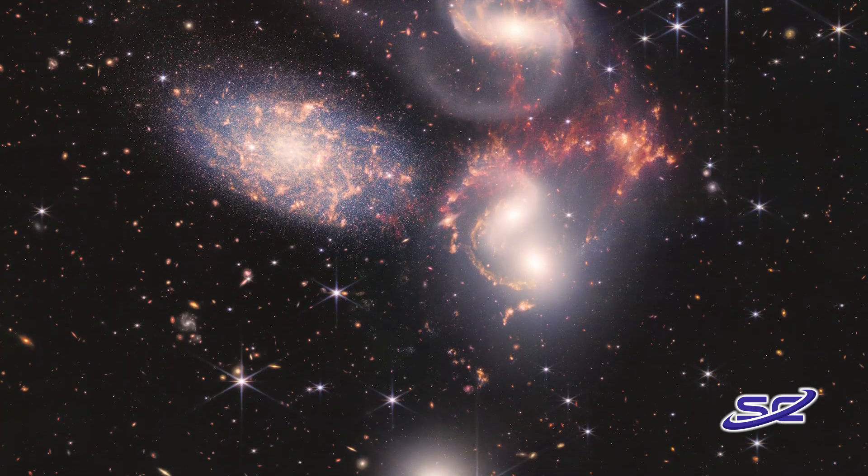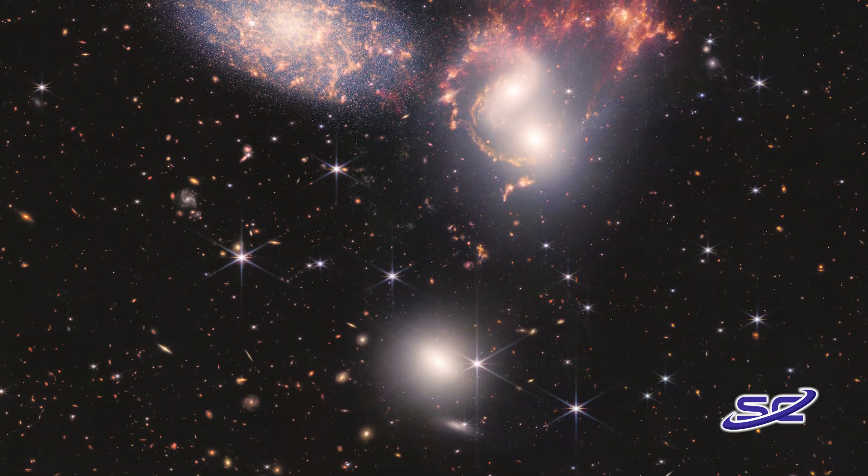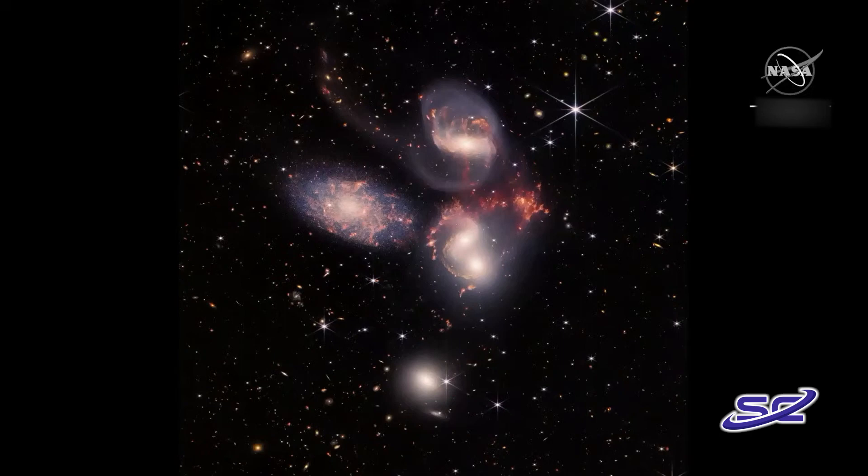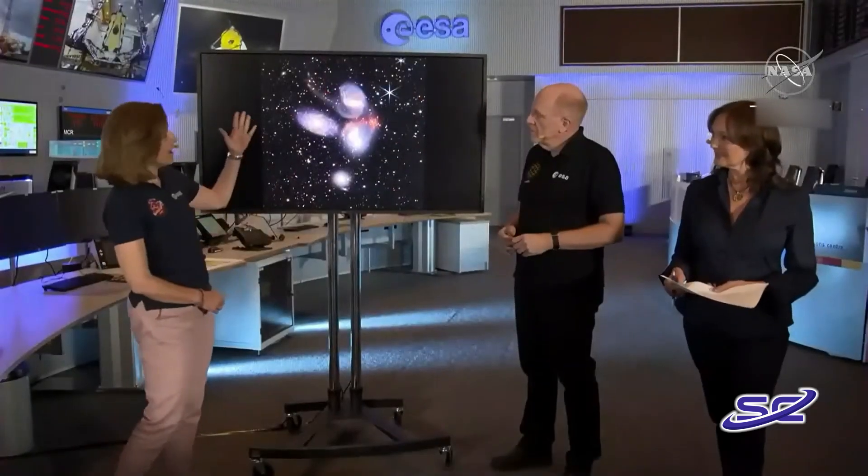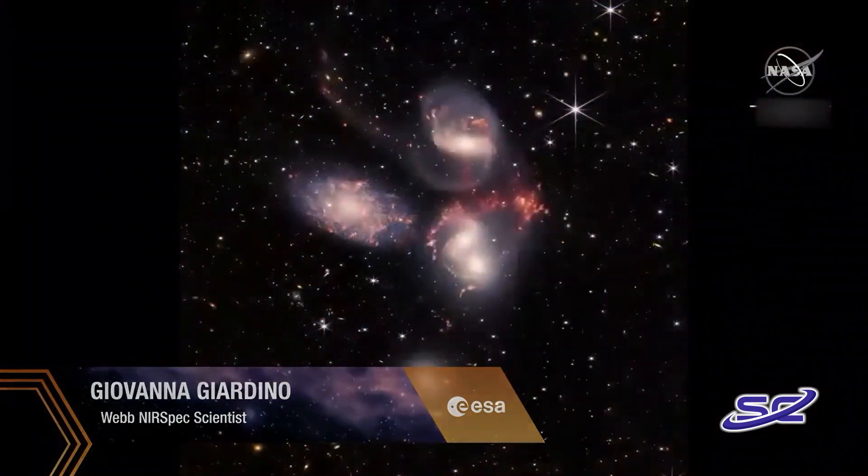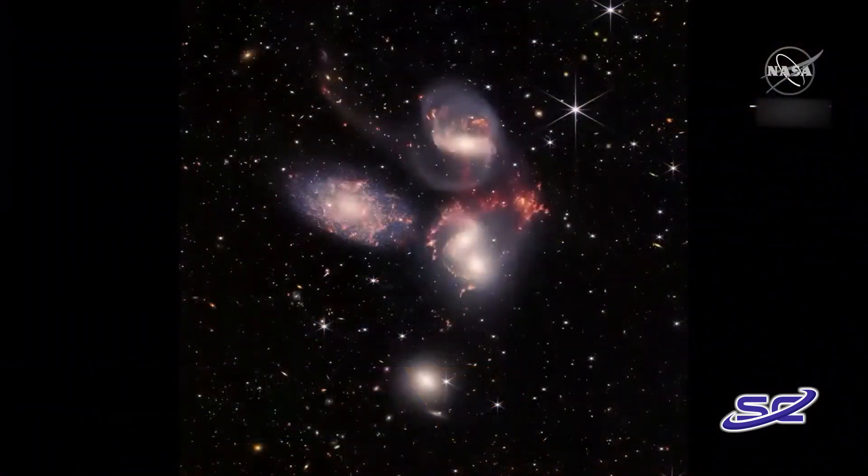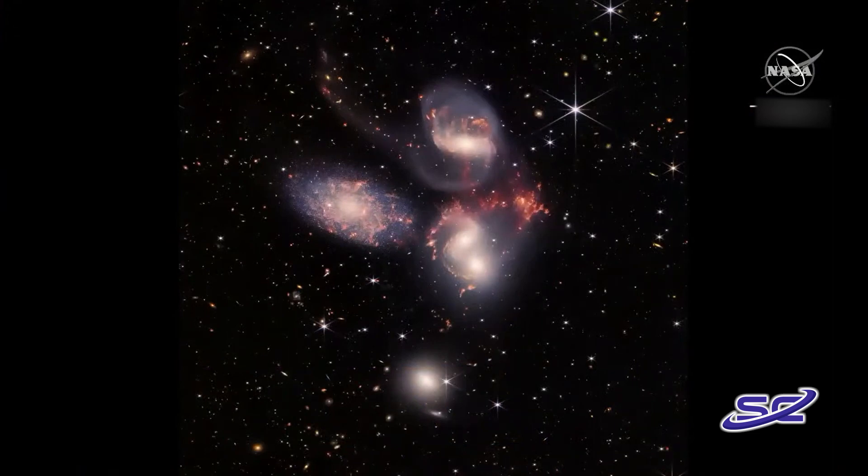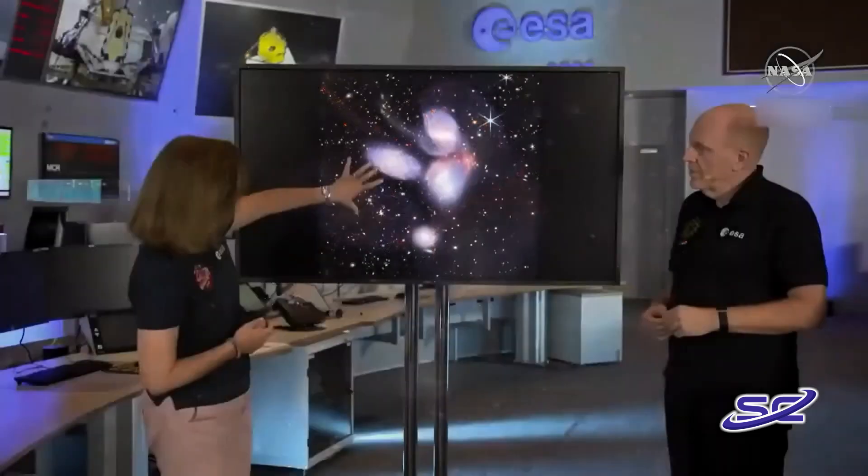Next up is the image of a galaxy cluster called Stefan's Quintet, five galaxies, four of which interact. Giovanna, what are we looking at? A quintet, so we are looking at five galaxies. Galaxies are this giant structure that we see everywhere around us in the universe. They contain from millions to hundreds of billions of stars, and in fact we live in one of them, the Milky Way. And here we see five of them.